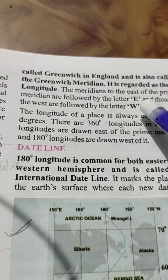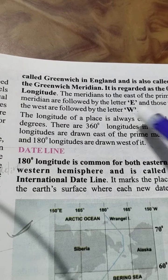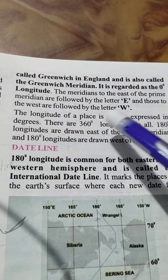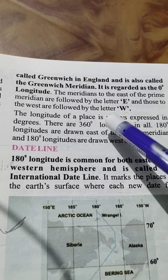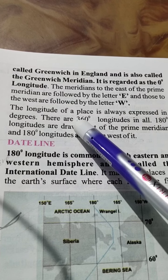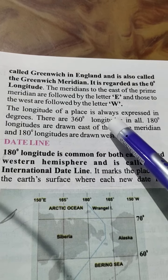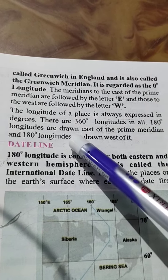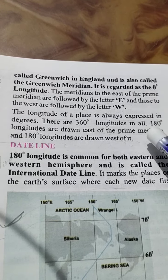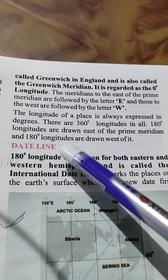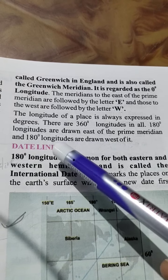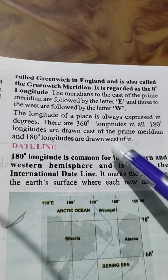The meridians to the east of the prime meridian are followed by the letter E, and those to the west are followed by the letter W. The longitude of a place is always expressed in degrees. There are 360 degrees of longitude in all. 180 degree longitudes are drawn east of the prime meridian and 180 degree longitudes are drawn west of it.